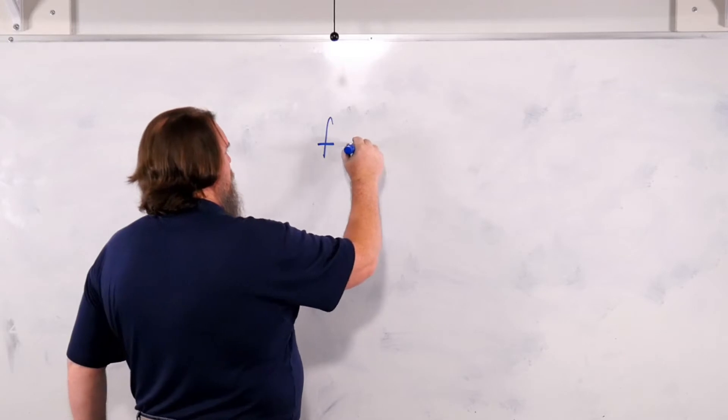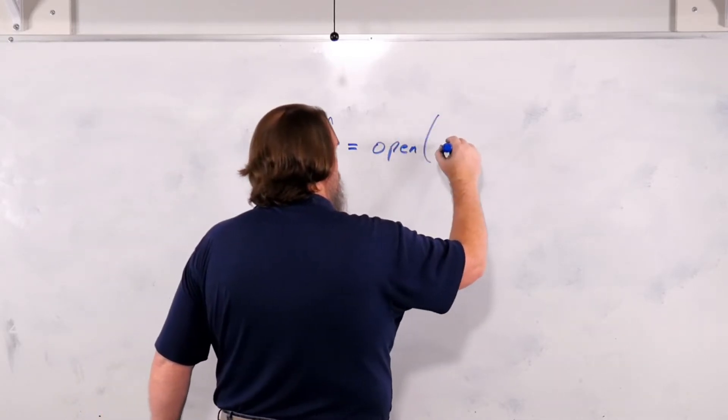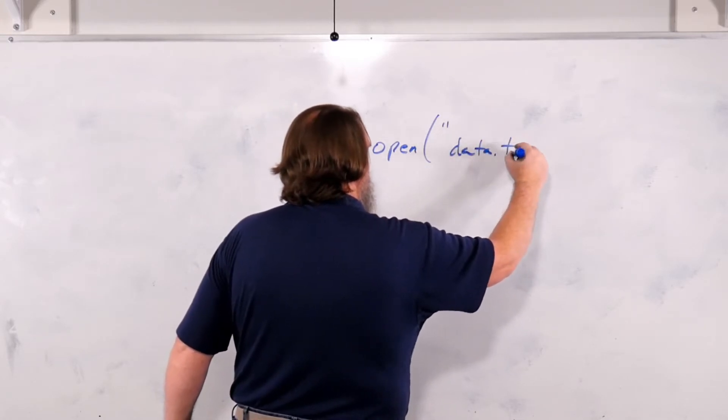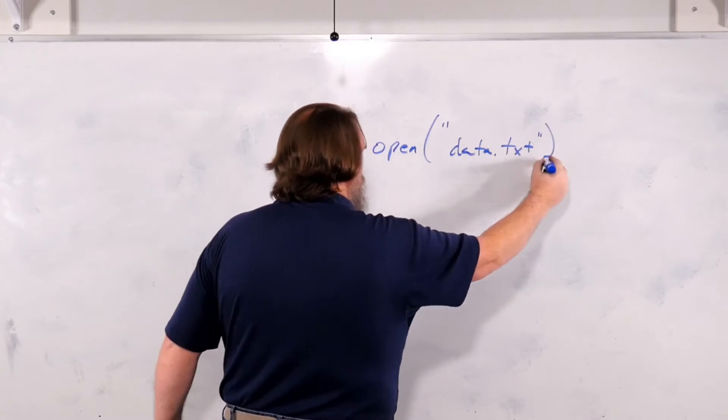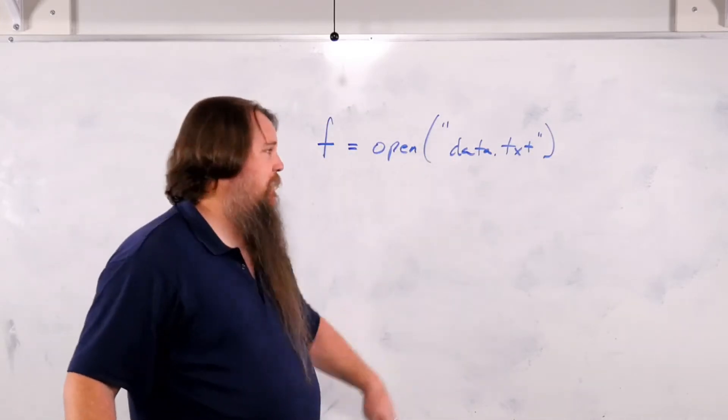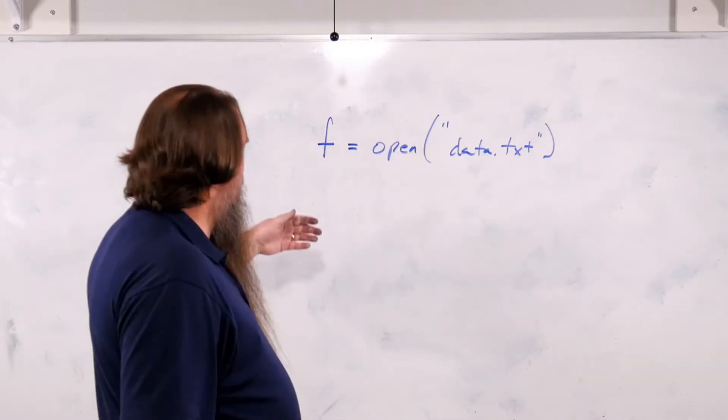So here we'll say the variable f equals open data.text. Alright, so open is going to look for the file data.text. If it exists, then it will go ahead and actually read it.